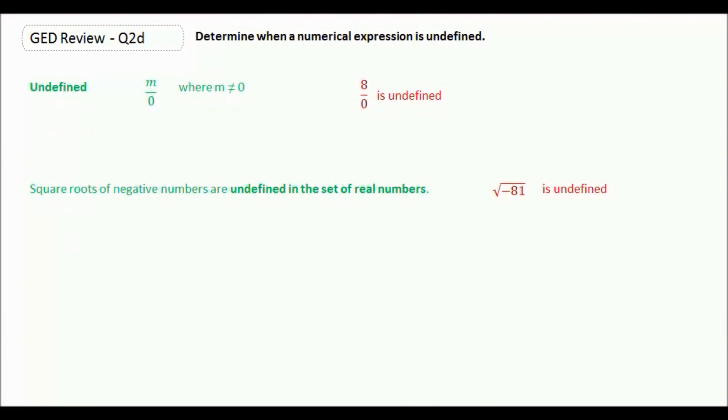Now there's times when numbers are undefined. Undefined means when you have m over 0 and m doesn't equal 0. That gives you something else. So if I have 8 over 0, it's undefined.